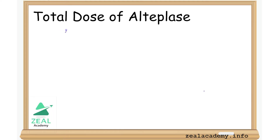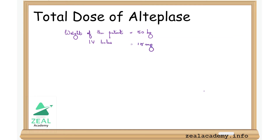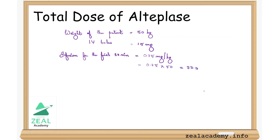To find the total dose of alteplase, the weight of the patient is given as 50 kg. The IV bolus is 15 mg. The infusion for the first 30 minutes is 0.75 mg per kg, which gives us 0.75 × 50 = 37.5 mg.